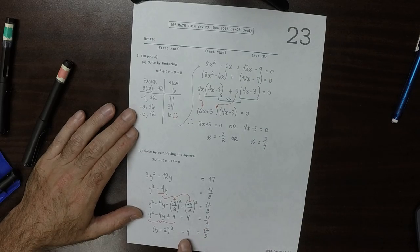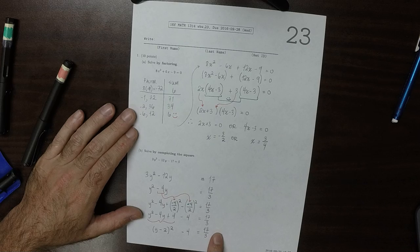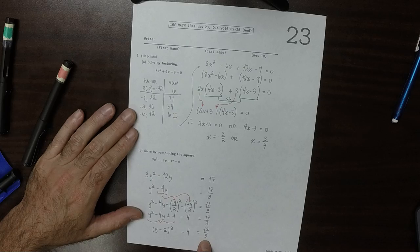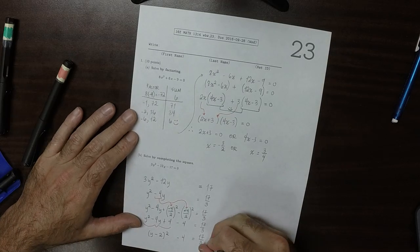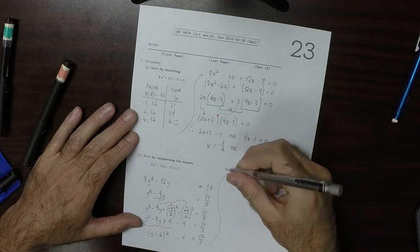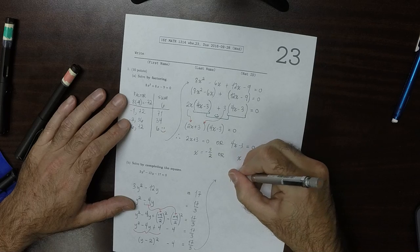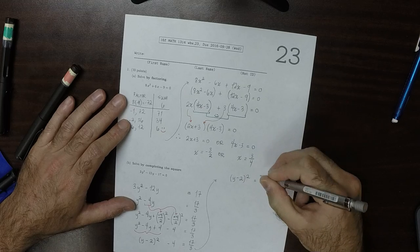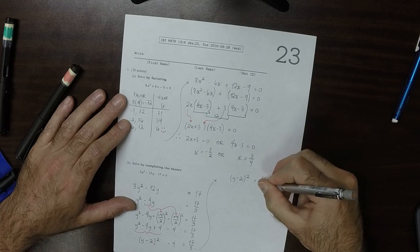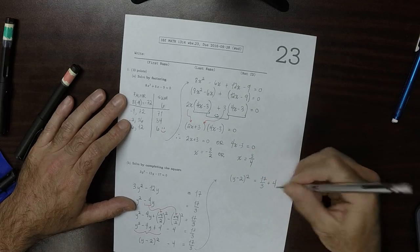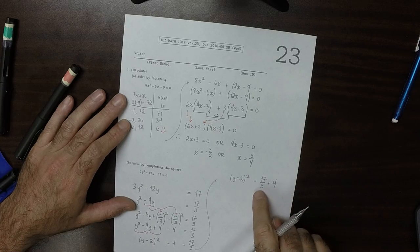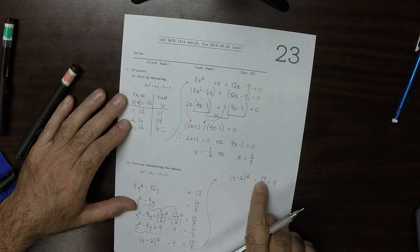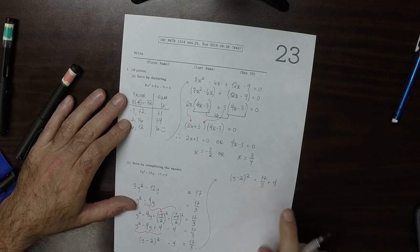Now we'll move the 4 to the other side. This would be y minus 2 squared is 17 over 3 plus 4. Adding these together, 3 times 4 is 12 plus 17 is 29 thirds.